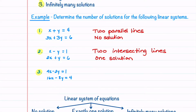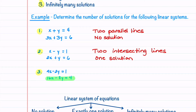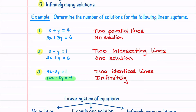In our third example, the second equation is a multiple of the first — multiply the first equation by four and you get the second. Because of this, we have two identical lines that intersect at every single point, giving infinitely many solutions. Since two lines will either be parallel, intersect at one point, or be identical, you can see why there are only three possible types of solutions.